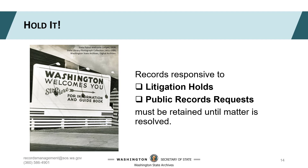Agencies can choose to hold onto records past retention for various reasons, but there are two situations where you would absolutely need to hang onto records past their minimum retention. One is a litigation hold: if there's a lawsuit pending or ongoing and you have responsive records, you need to keep those records until the litigation is resolved or the hold is lifted. The second is a public records request. If records that are 20 years past their retention are slated for destruction on Monday, and a public records request comes in that afternoon, you'll still need to provide them to fulfill the request. Once the request is fulfilled, you can resume with destruction or transfer as planned.